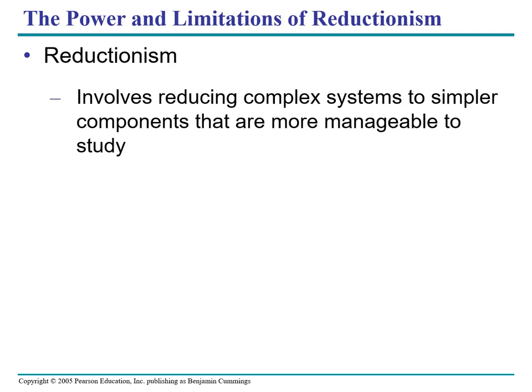Reductionism involves reducing complex systems to simpler components that are more manageable to study. To fully explore emerging properties, biologists today complement reductionism with system biology — exploration of a biological system by analyzing the interactions among its parts. A single cell leaf can be considered a system, as can a frog, an ant colony, or a desert ecosystem. By examining and modeling the dynamic behavior of an interactive network of components, system biology enables us to pose new kinds of questions — for example, how do networks of molecular interaction in our bodies generate our 24-hour cycles of wakefulness and sleep, or how does a gradual increase in atmospheric carbon dioxide alter ecosystems and the entire biosphere? System biology can be used to study life at all levels.